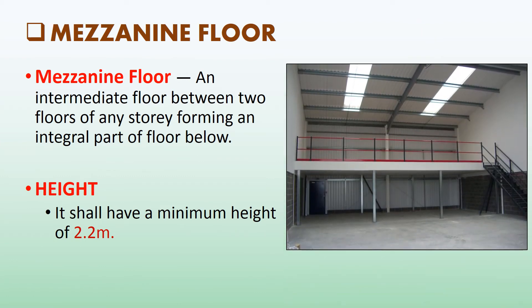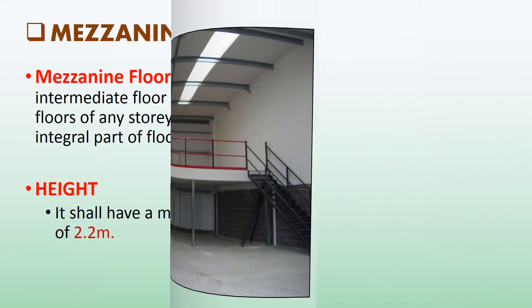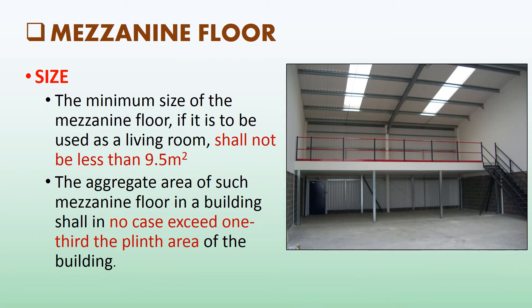We will now see requirements of mezzanine floor. First, understand what mezzanine floor means. A mezzanine floor is an intermediate floor between two floors of any storey, forming an integral part of the floor below. The height requirement of a mezzanine floor is that it shall have a minimum height of 2.2 meters. The minimum size of the mezzanine floor, if it is to be used as a living room, shall not be less than 9.5 square meters. The aggregate area of such mezzanine floors in a building shall in no case exceed one-third of the plinth area of the building.